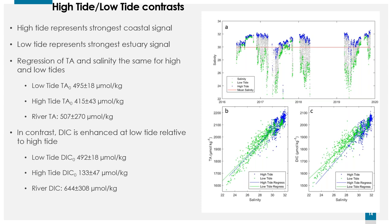Looking at the regressions of TA against salinity at high tide versus low tide, the lines are basically indistinguishable and not very different from the mean river TA we measure from river samples. In contrast, for DIC the lines are different — the DIC at low tide, coming out of Great Bay, is enhanced relative to the DIC at high tide. Both are lower than the river DIC measurements, but there's a pretty clear difference between high tide and low tide DICs.